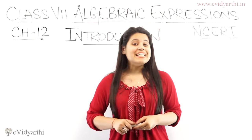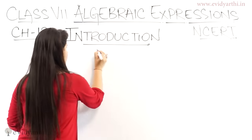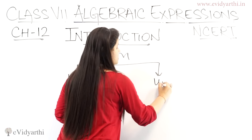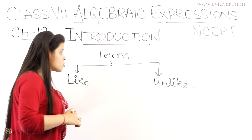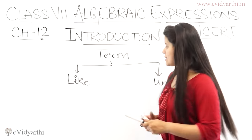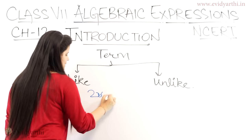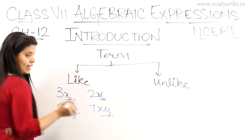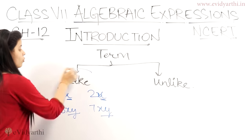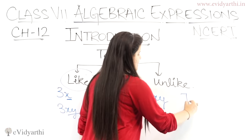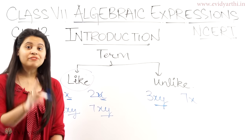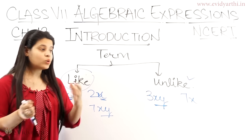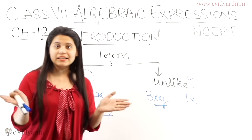The next topic is like terms and unlike terms. Hum ne dekha term kya hota hai. Ab is term ko hum divide kar sakte hai dho part mein: ek hai like terms, aur ek hai unlike terms. Like terms aur unlike terms mein difference kya hota hai? Like terms woh hote hain jiske algebraic factors same hote hain. For example, 3x and 2x — inka algebraic part same hai. Aisi 3xy aur 7xy — xy same hai, so woh like terms hain. Agar 3xy aur 7x lein, toh yahan xy hai aur wahan sirf x hai, so ye unlike terms ho gaye. Like terms aur unlike terms ka distinguish karna addition aur subtraction mein bahut zaroori hai.